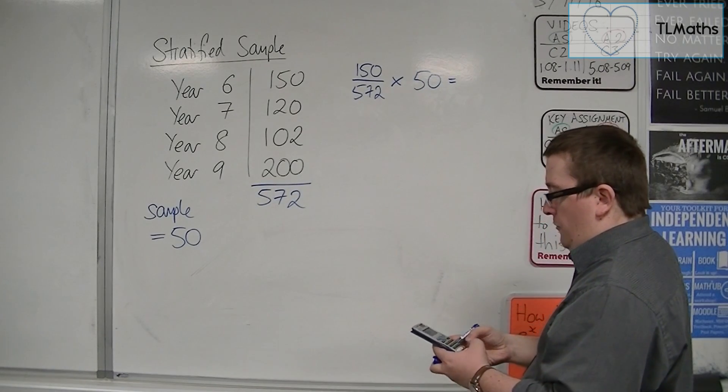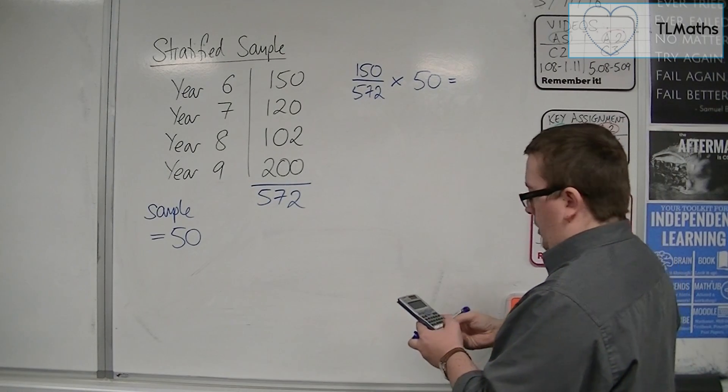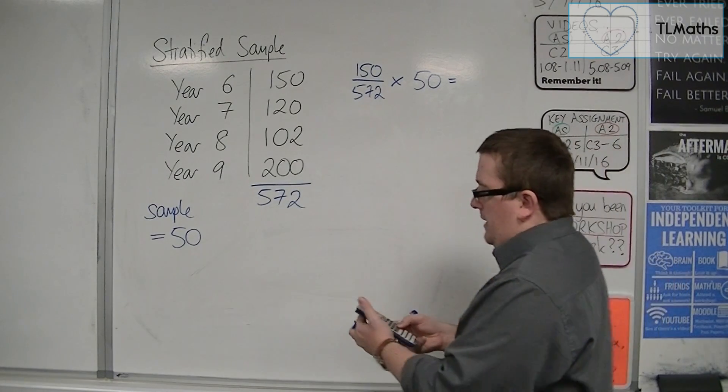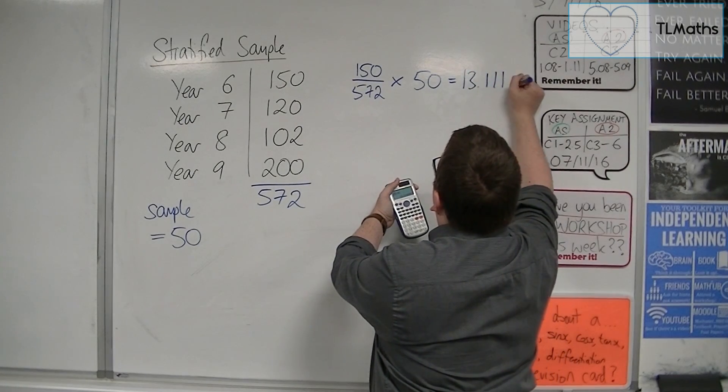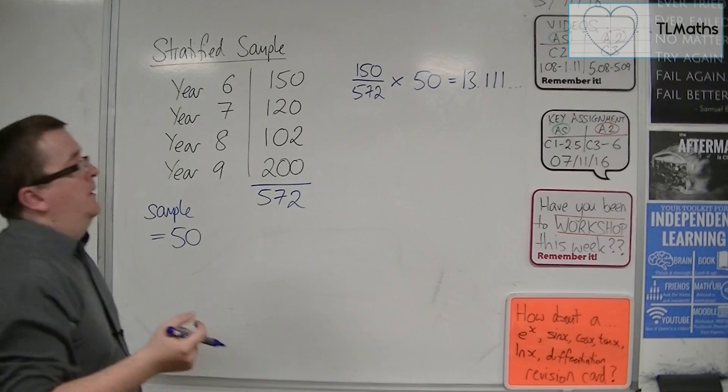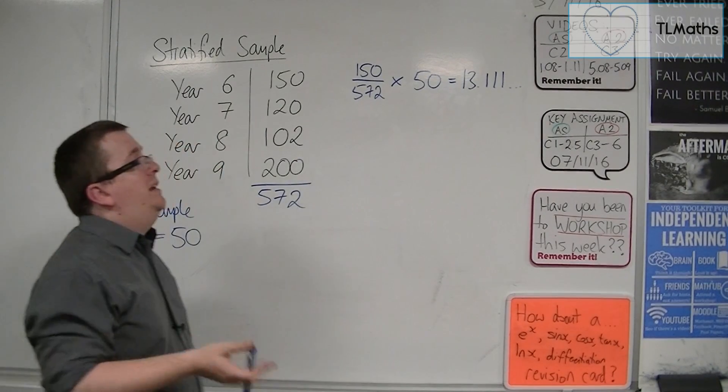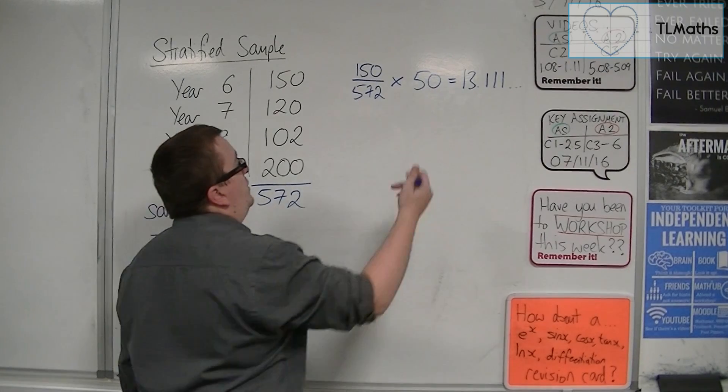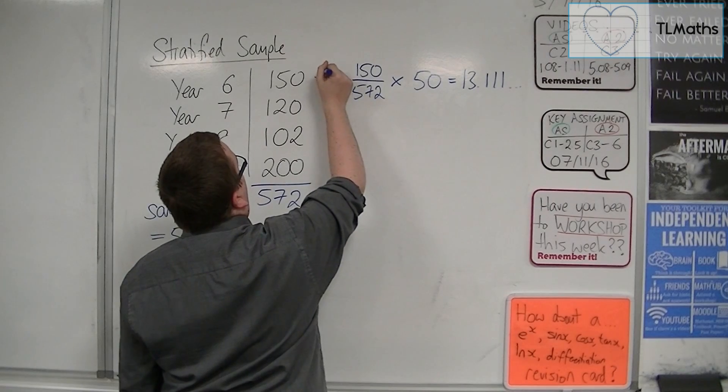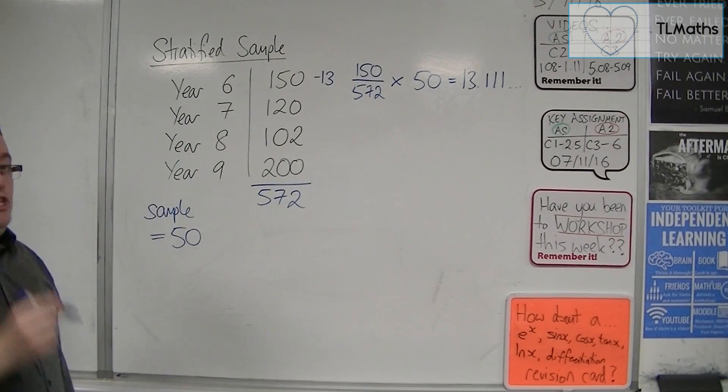So if I do that, 150 divided by 572 times by 50. And I get 13.111, etc. Now, I obviously can't hand out the questionnaire to 13.111 students in year 6. So what I would do is, I would say, right there, I'm going to need 13. I round it to the nearest student.